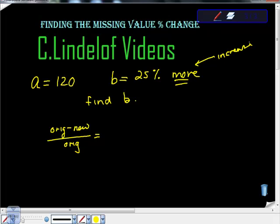After that, when I do new and original, I'm going to take that out of my mind for a second and just say which one is bigger. So B is bigger because it's more. So I'm going to say B minus 120. I'm going to set it up just like this over original.